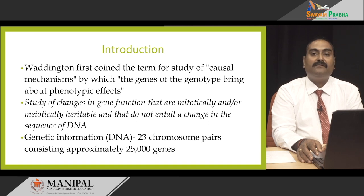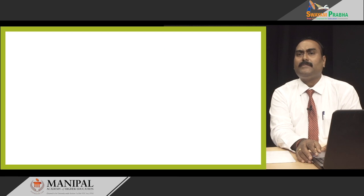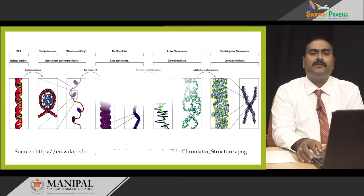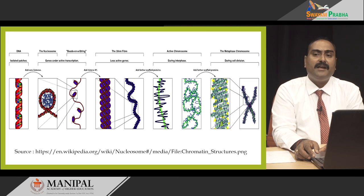The DNA genetic information is basically contained within the 23 chromosomal pairs that contain approximately 25,000 genes. Let us have a small introduction about how the arrangement structure is before we move on to what the epigenetic changes are. In this picture, we can see that there is a double-stranded DNA which gets coiled into different types in order to give the final chromosomal structure.